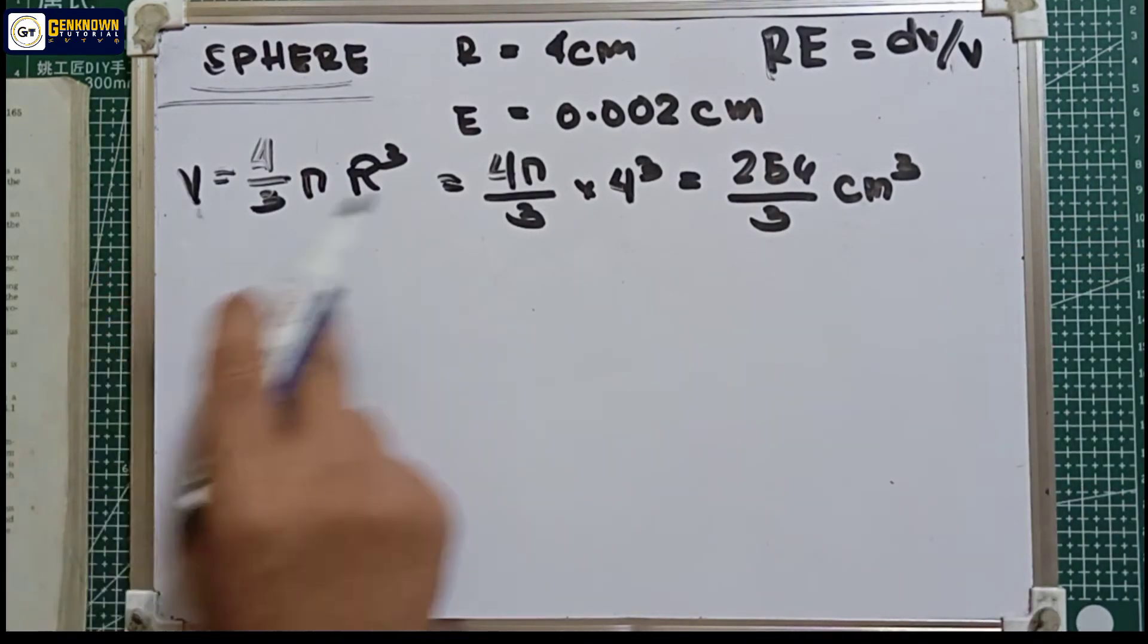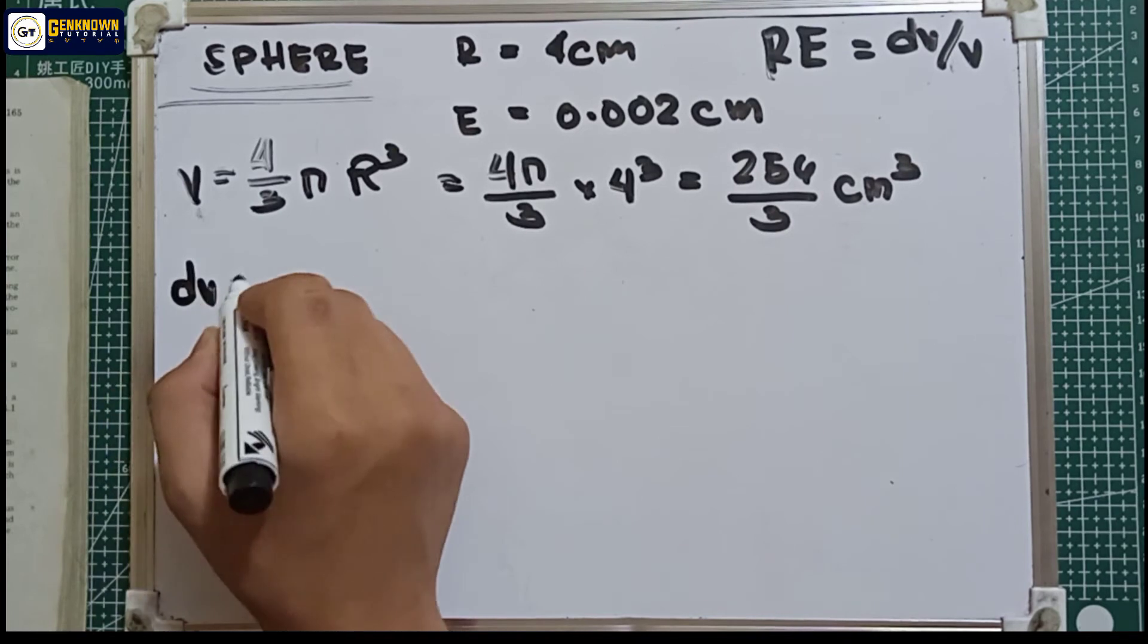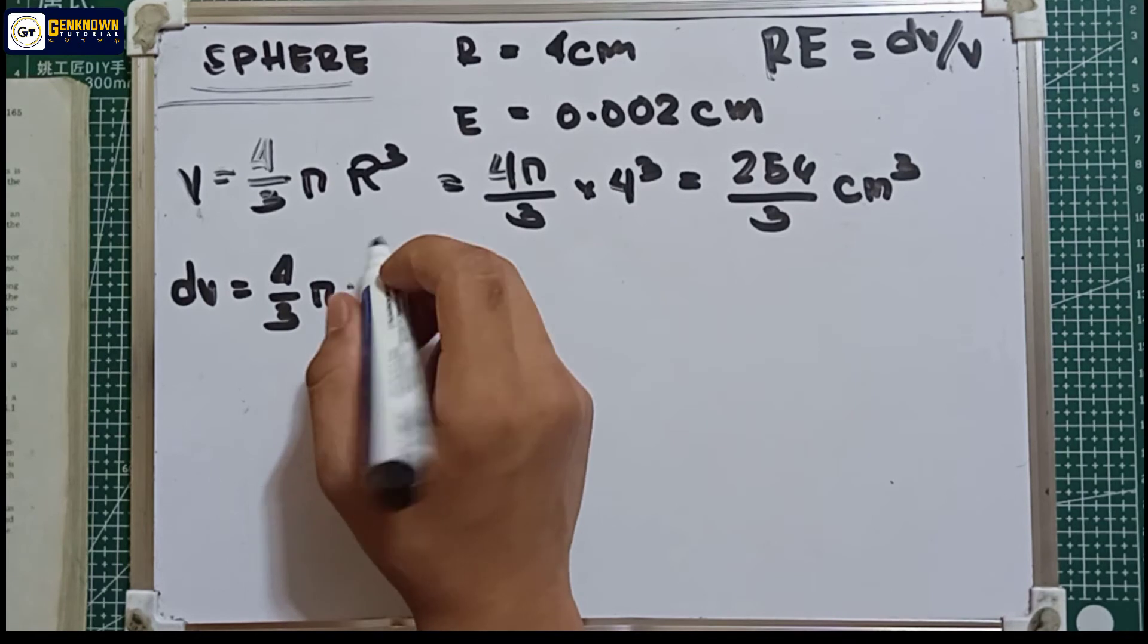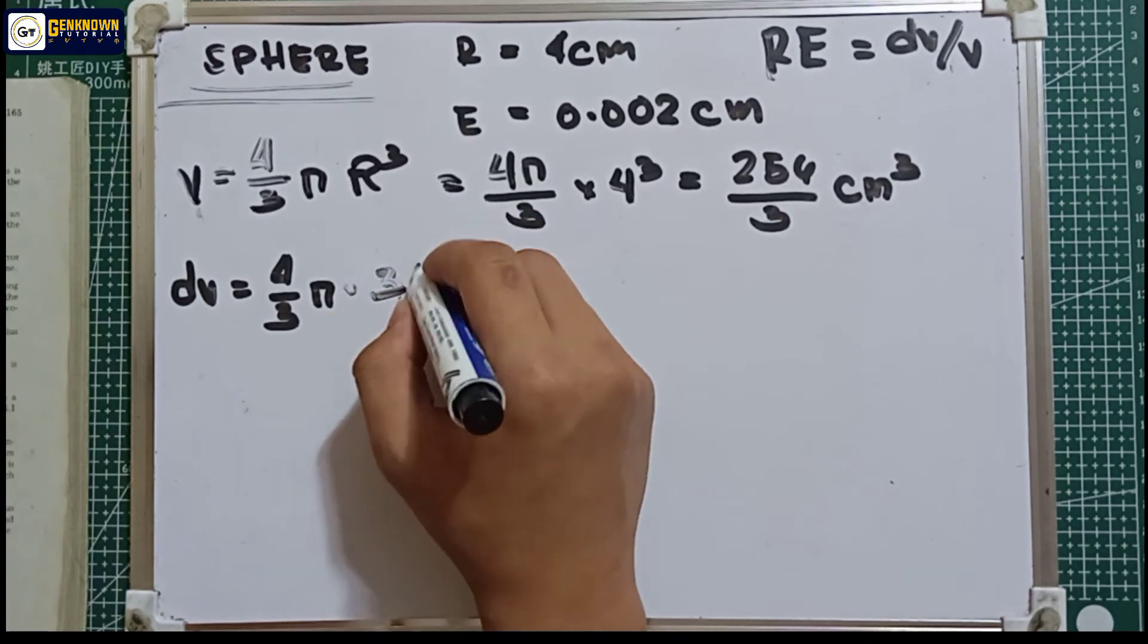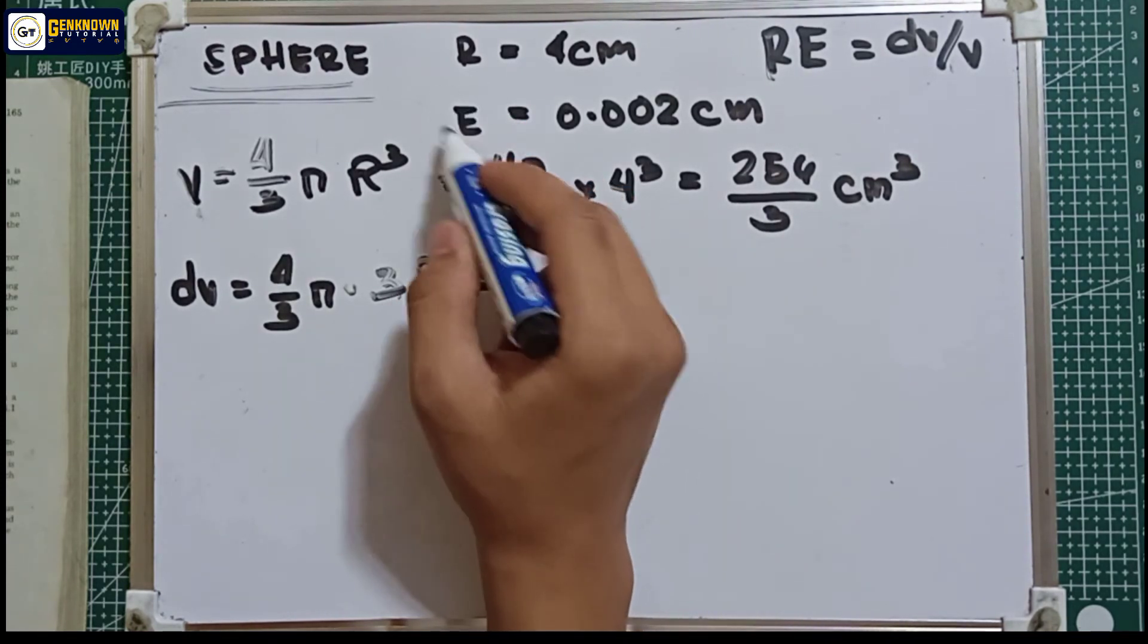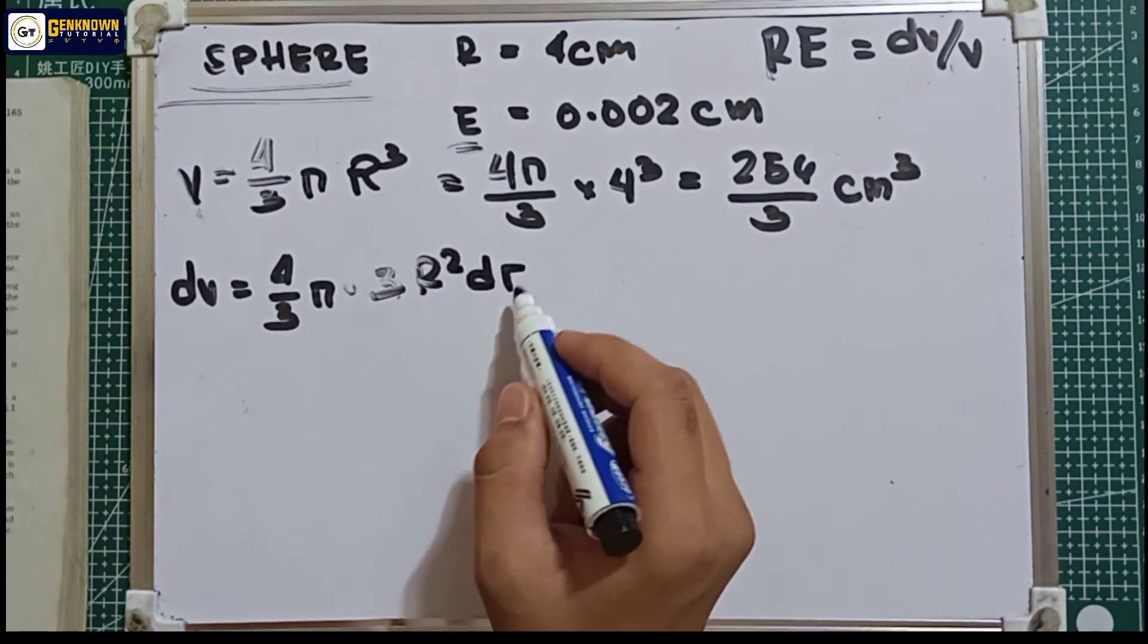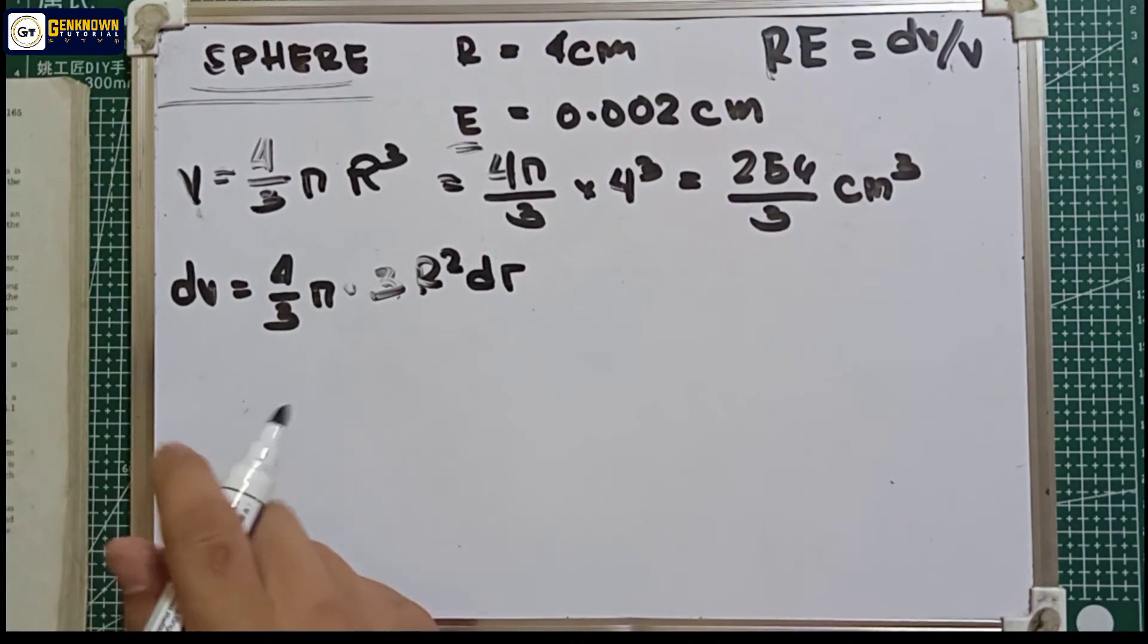So the differential of v, dv, is equal to 4/3 π times the differential of r³, which is 3r² dr. By the way, dr here is the error we're referring to, so it is equal to 0.002 centimeter. Let's substitute